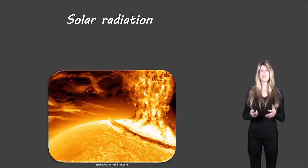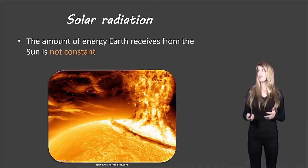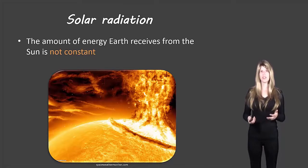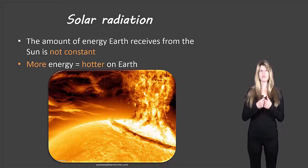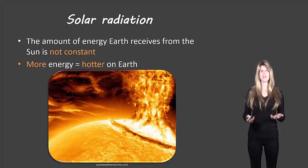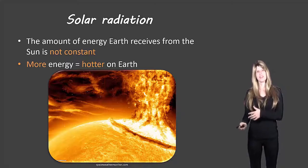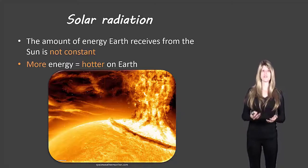The first factor is solar radiation. The amount of energy the Earth receives is not constant. If there's more energy coming in towards the Earth then the Earth is going to become hotter. If there's less energy, then the Earth will become cooler.